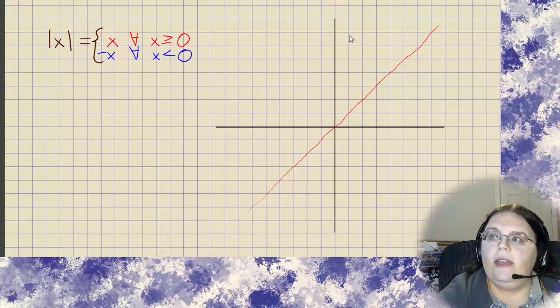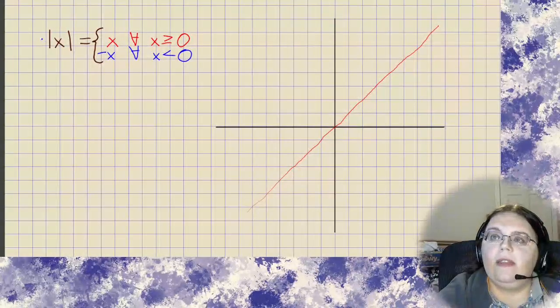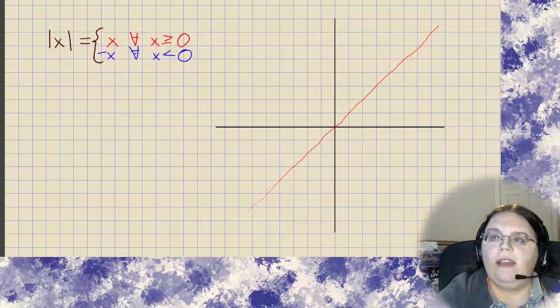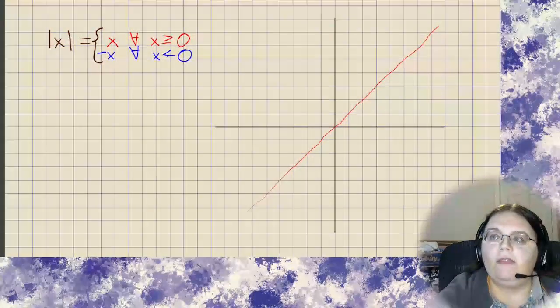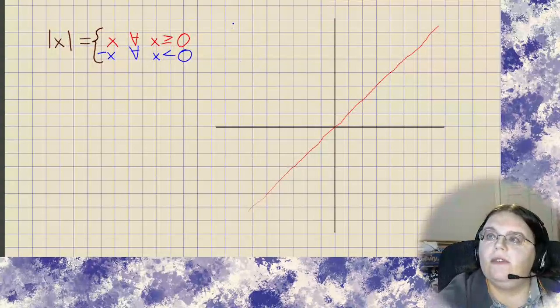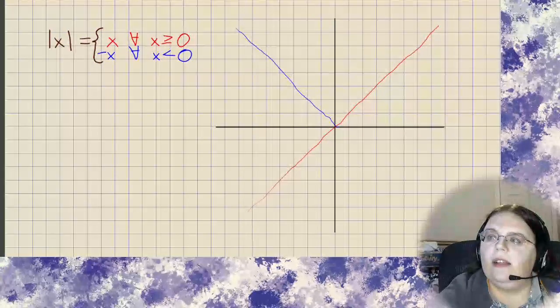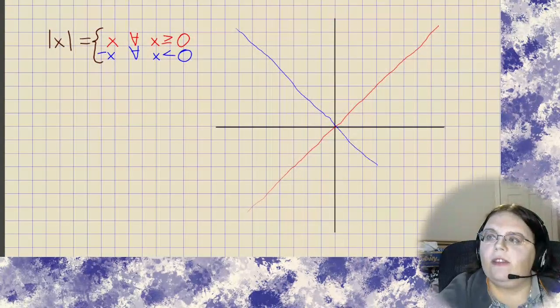Then there's another formula though. The absolute value of x looks like negative x for all values of x which are less than 0. So that looks like this function right here.